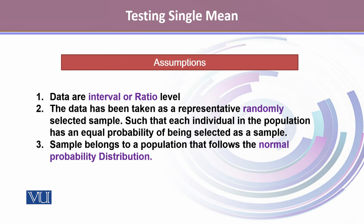For the one-sample t-test, we have three important assumptions. First, data must be at the interval or ratio level, meaning it should be a continuous variable. Second, data must come from a representative, randomly selected sample — the randomness assumption is very important. Third, the sample must belong to a population that follows a normal probability distribution, which is the normality assumption.